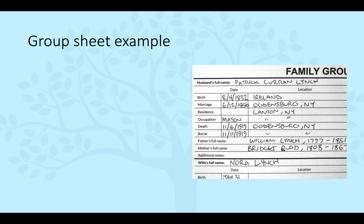Here's an example of a group sheet that I filled out. You can see I've put the husband's full name at the top. You always start with a couple — so it's usually husband and wife. Sometimes you might need two family group sheets if somebody remarried or there's some other special situation. And then you put in dates: birth, marriage, death, burial, if you have that information available, and then the locations where they took place.